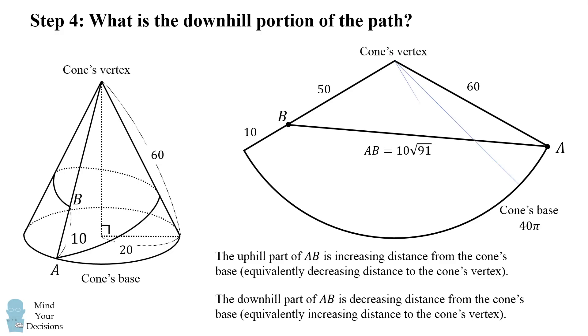So if we draw some slant heights which will be represented as radii on this circular arc, the uphill portion will be decreasing distance to the cone's vertex, and then the downhill part will be increasing.